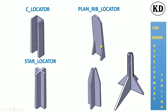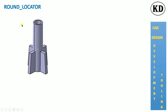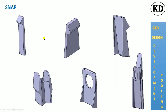The two-star locator is used for four-way location, meaning it will restrict the degree of freedom in four ways. There will be a chamfer on the star locator for entry. There is also a round locator which will reduce the cost of the mold.